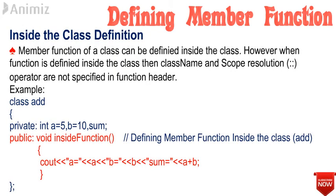Now let us understand how a member function of a class can be defined inside the class. To define a member function inside a class, the function declaration within the class is replaced by the actual function definition inside the class. A function defined inside a class is treated as an inline function. Only small functions are defined inside the class definition. When a function is defined inside the class, the class name and scope resolution operator are not specified in the function header.